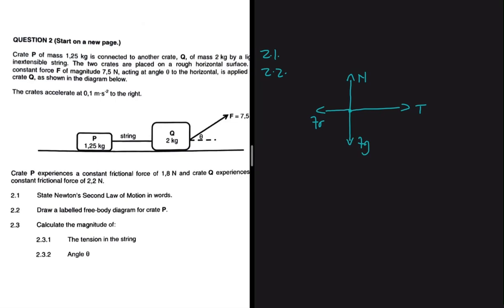The force of the tension is overpowering the force due to the friction, so we must show that in our length of the vectors. I don't know if the examiners are going to penalize you if your Fr is not less than the tension force, but it's supposed to be less than the tension force because they are moving to the right with that acceleration of 0.1.